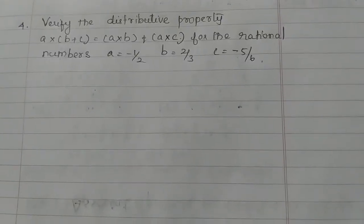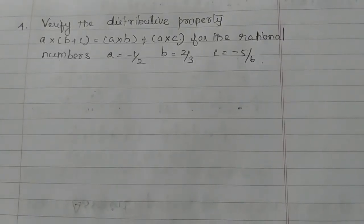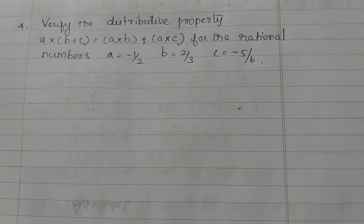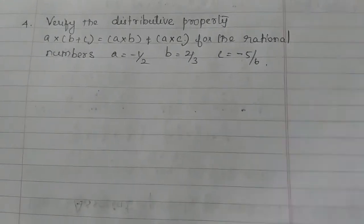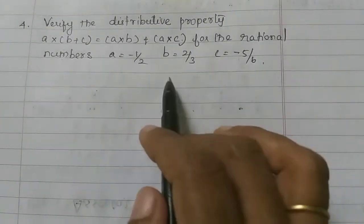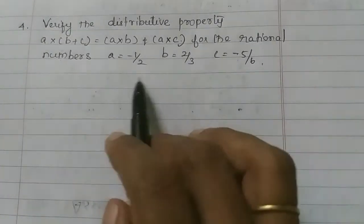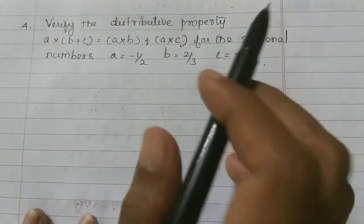Students, in this video we will take the next step. We will verify the distributive property: A into B plus C equals A into B plus A into C, for the rational numbers A, B, and C. So given the values of A, B, and C, we will verify the distributive property.